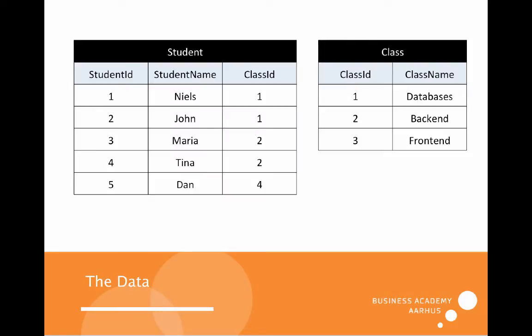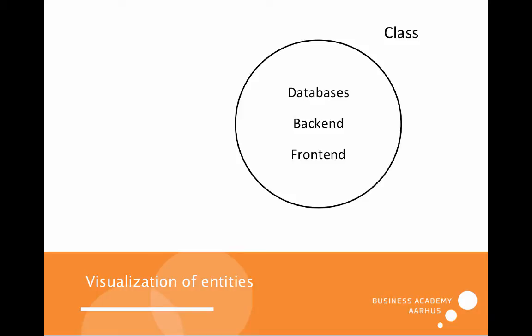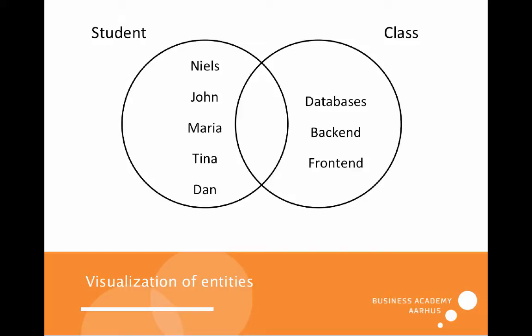This is our data, and as we can see we now have a third class named frontend. If you look at the student data, none of the students are enrolled in this frontend class. That means we have a student who is not in any class — that is Dan — and then we have frontend which does not contain any students. The students can be illustrated in a circle using the Venn diagram, and then we have the class which contains the three classes. We can use this illustration to show what happens when we use a join, because the two entities are joined together, and the output falls into these circles or the common area.